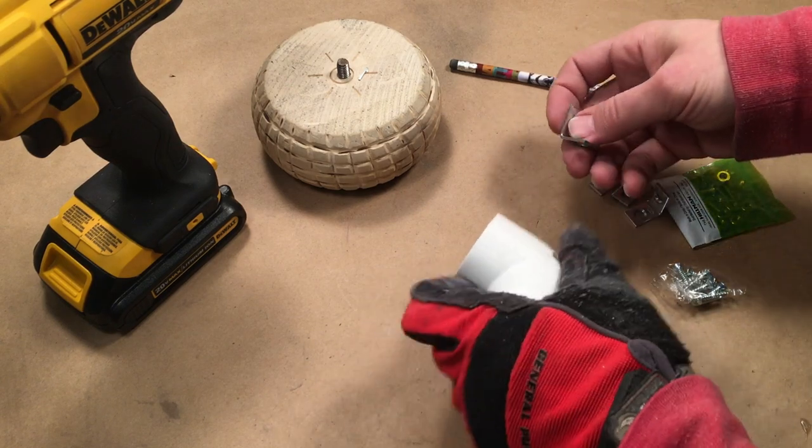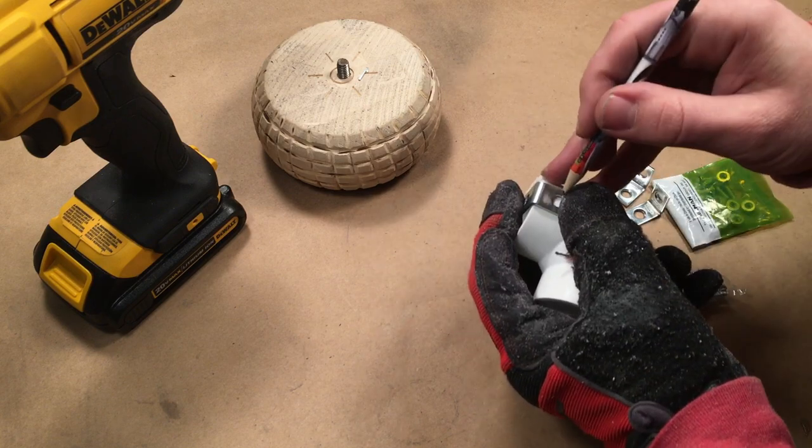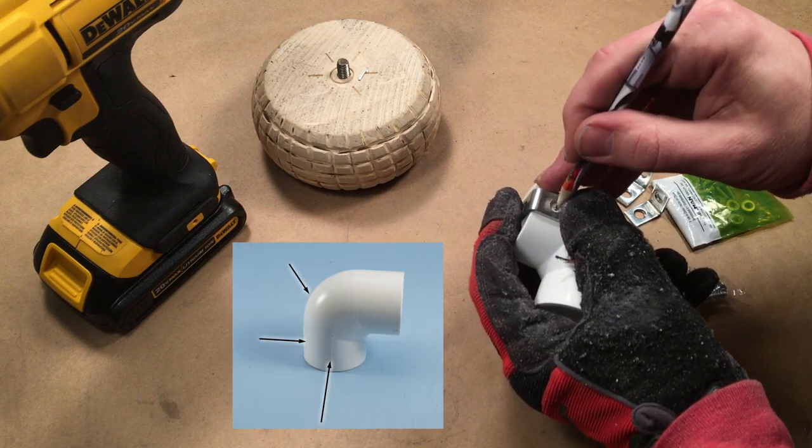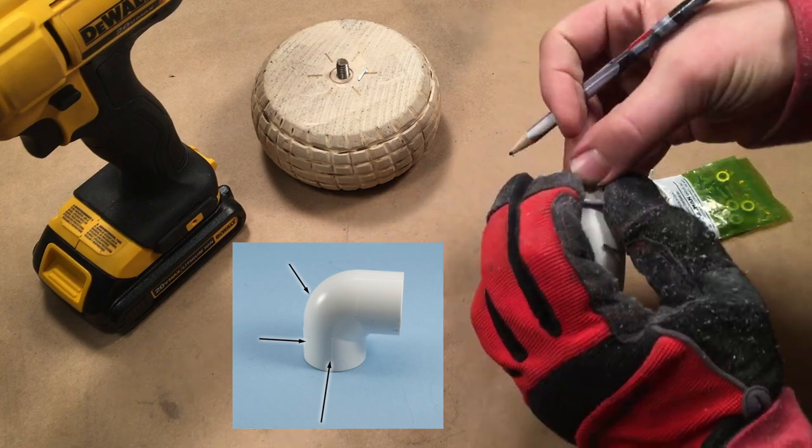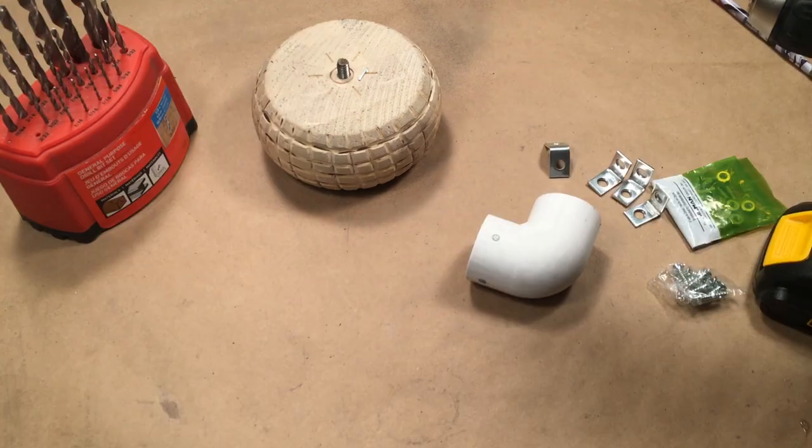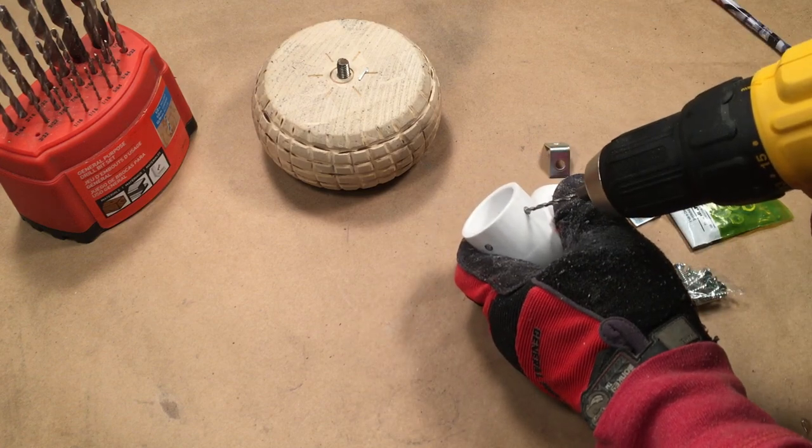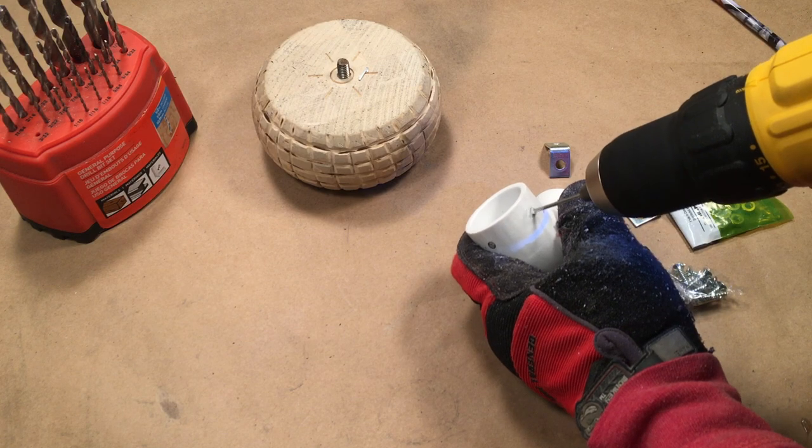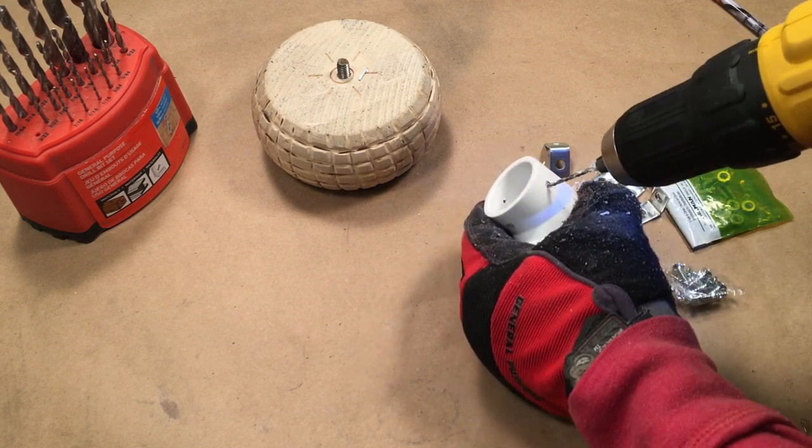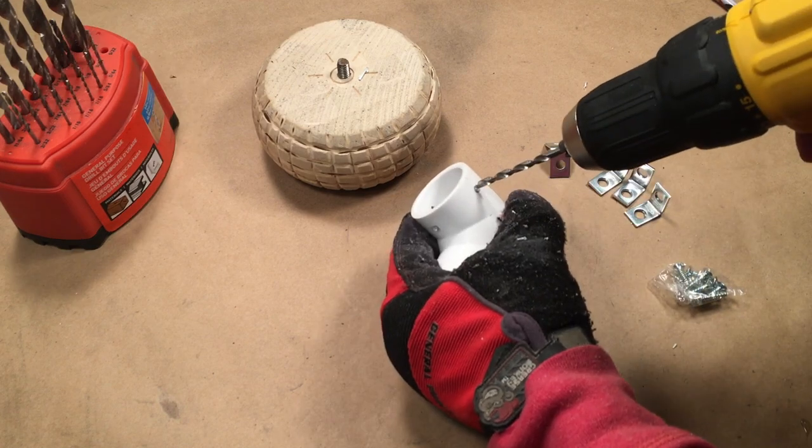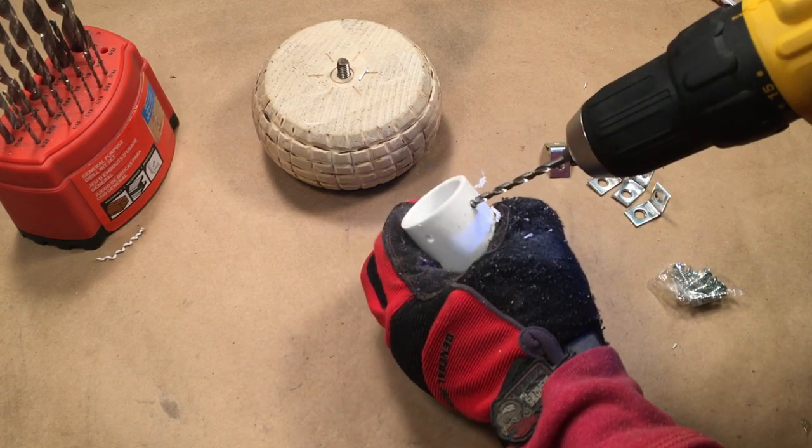Take a corner brace and press it flush against the bottom of the one inch PVC elbow. Make a pencil mark on the right, back, and left of the elbow joint. You do not need to mark under the elbow joint. Drill pilot holes on each of the three pencil marks. I used an 11/64ths inch bit to widen the holes for the number 8 screw.